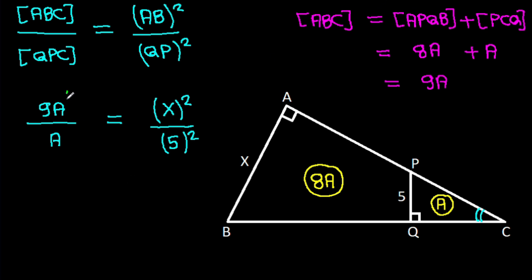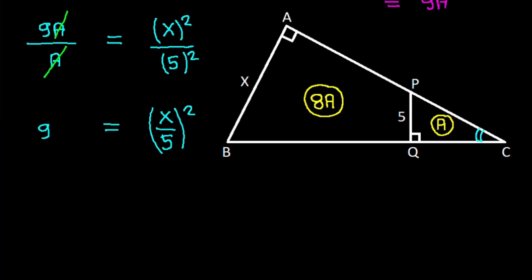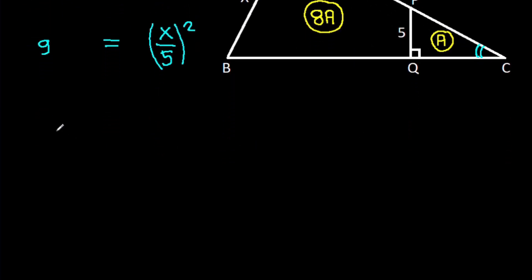And A will get cancelled. So it is X over 5 squared. And X over 5 squared equals 9. So X over 5 will be the square root of 9, that will be 3.